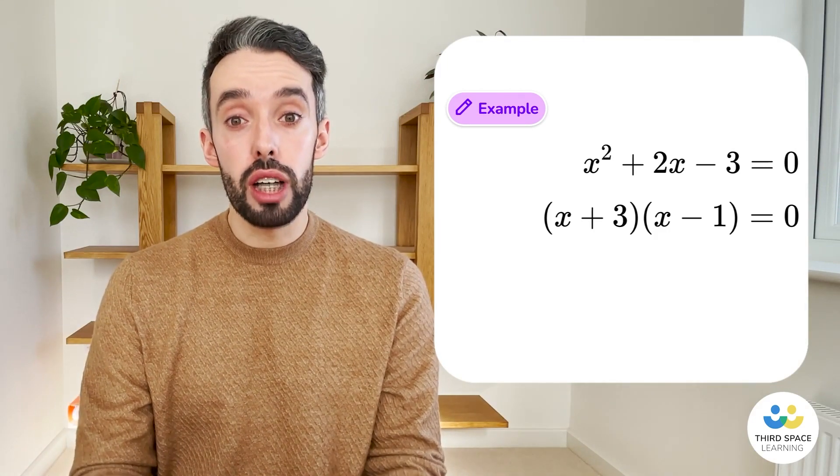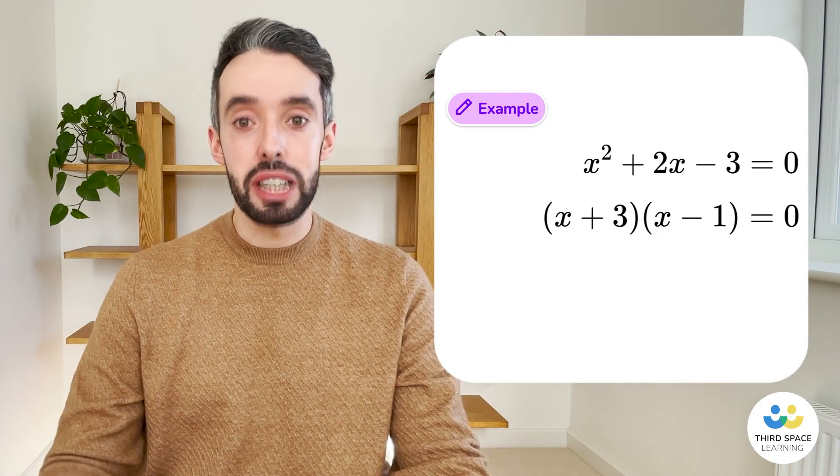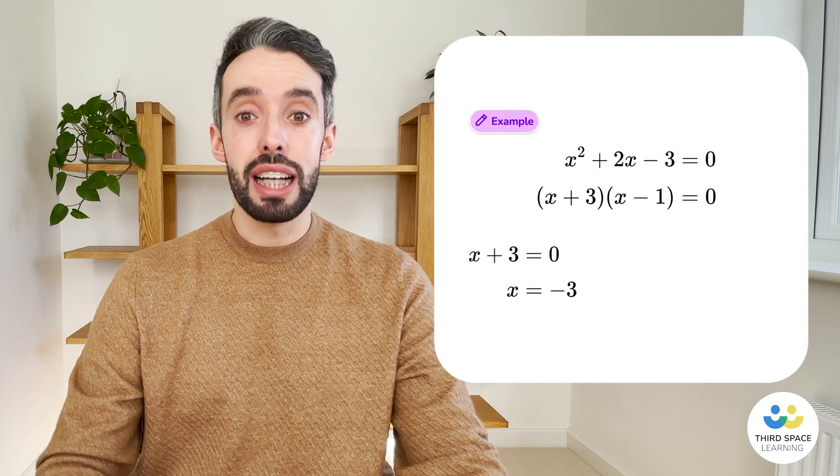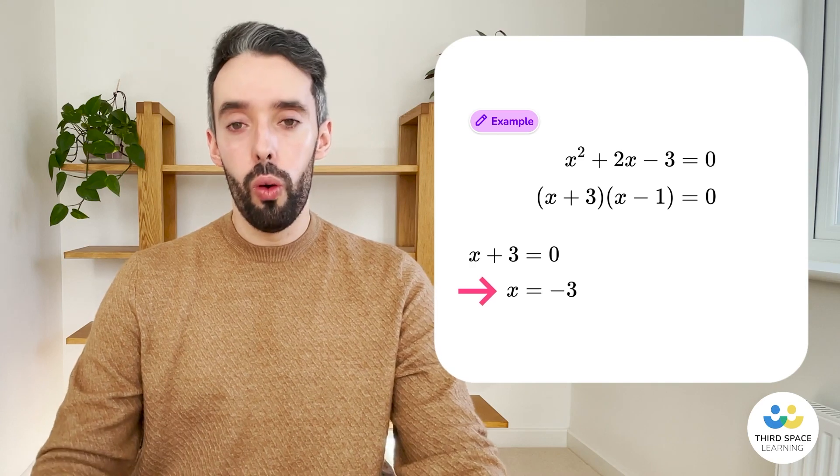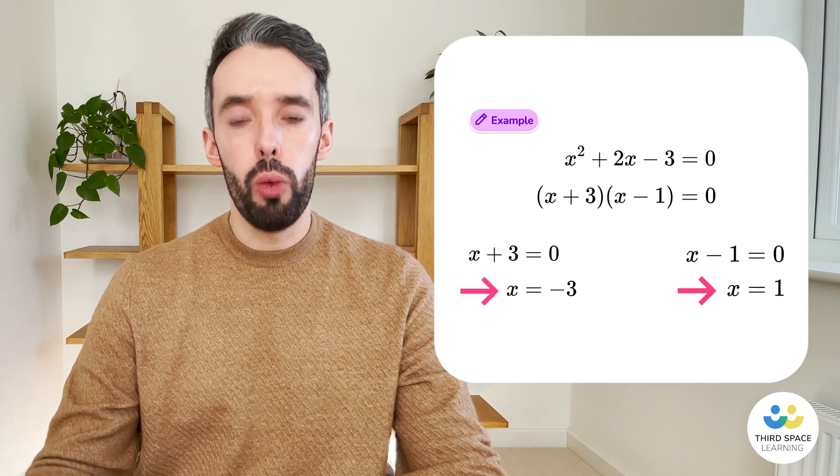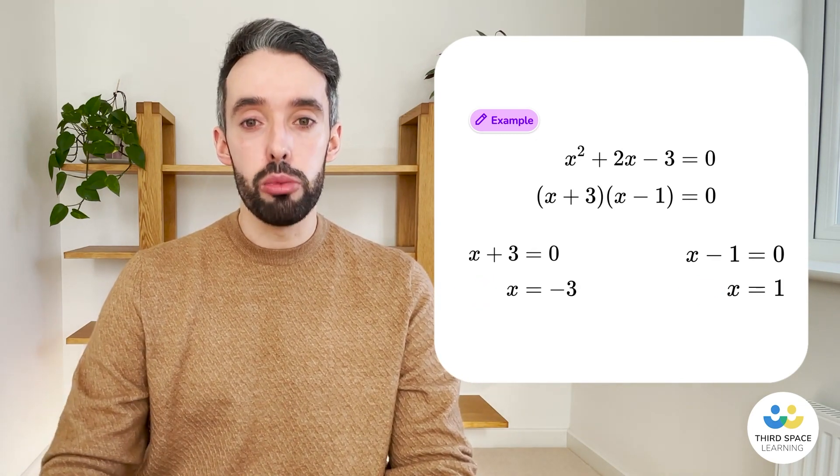Now we have two terms that multiply to give zero. This means one of them must be zero. So x plus 3 equals zero, in which case x equals negative 3, or x take away 1 is zero, in which case x equals positive 1. So our solutions are x equals negative 3 and x equals positive 1.